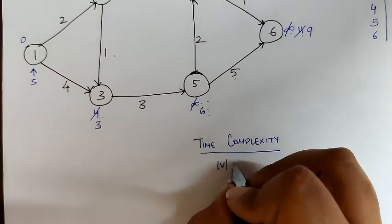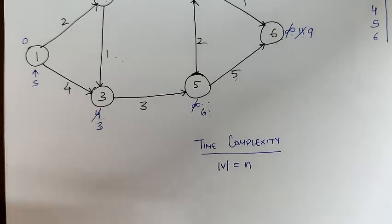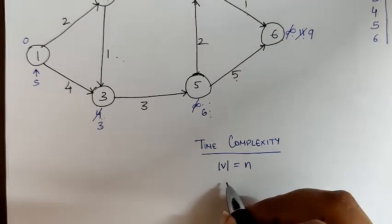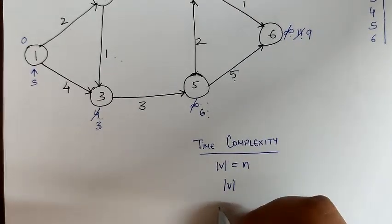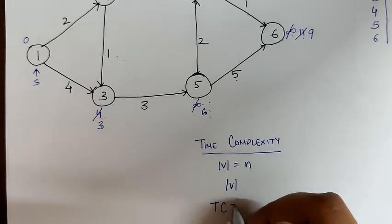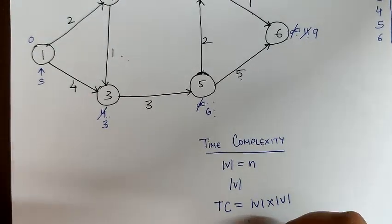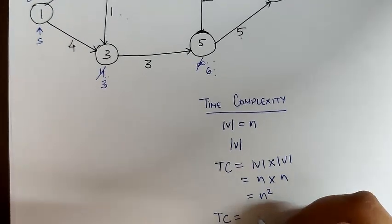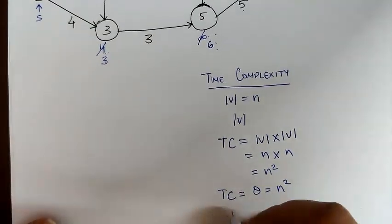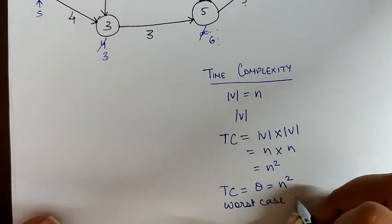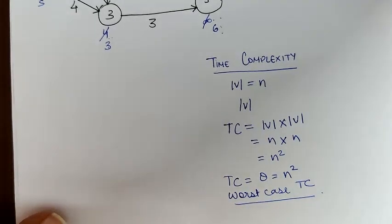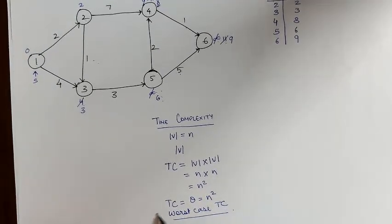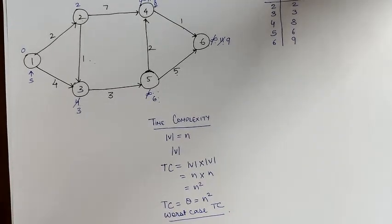Let each vertex be V, which can be written as N. For all the vertices, we have to find relaxation for all vertices. So in general, at most, how many vertices are being relaxed? This is also V. Our time complexity can be written as V into V, and V is N. Therefore, N into N which is equal to N squared. This can also be written as theta equal to N squared. This is our worst case time complexity.